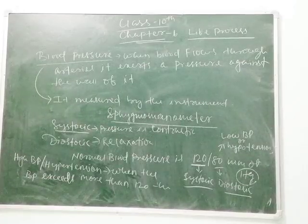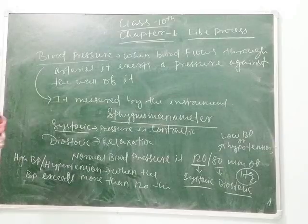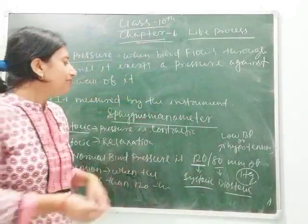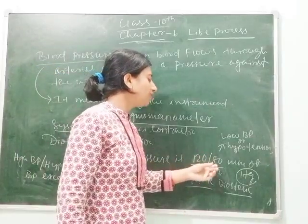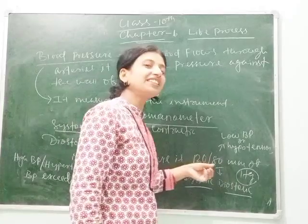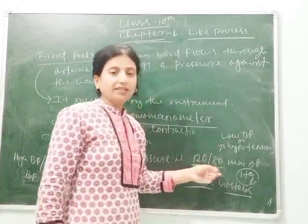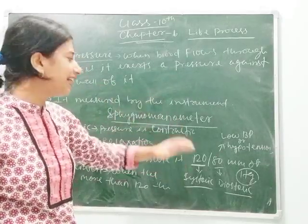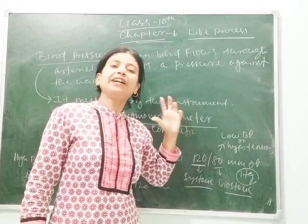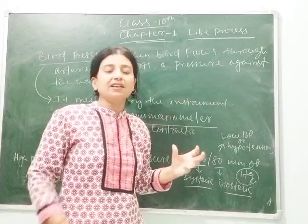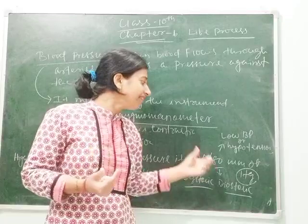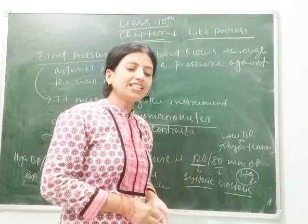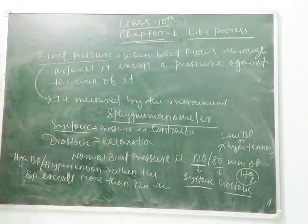Systolic and diastolic pressures sometimes cause disorders. The highest pressure may reach 130 or 140 and the lowest may drop to 60 or 70 — this is a disorder. If this exists for a long time and is not controlled, high blood pressure can cause damage to the heart, kidney, liver, and other organs, since blood is supplied to all these parts.